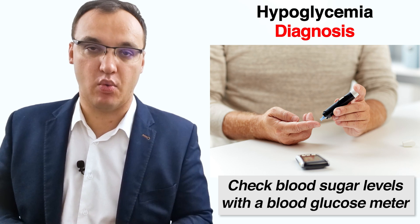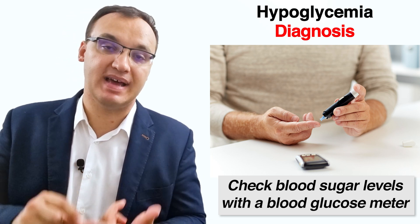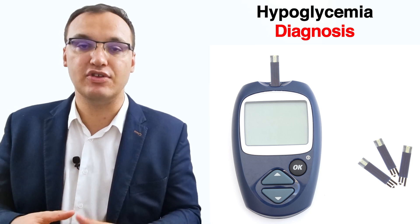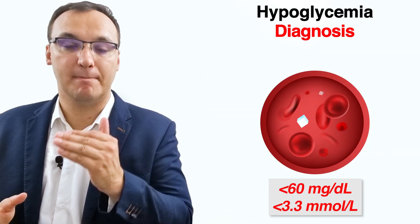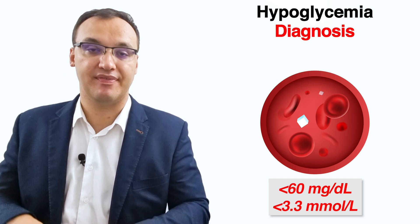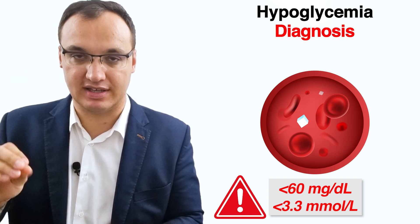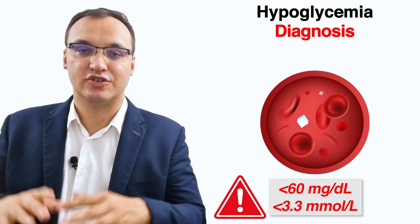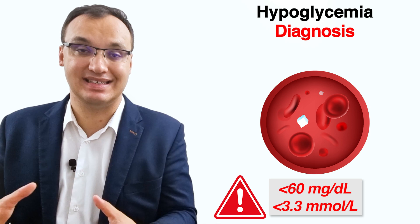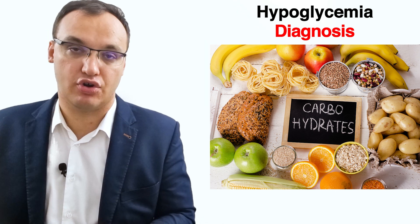How can you test for hypoglycemia? If you have signs or symptoms of low blood sugar, check your blood sugar levels with a blood glucose meter — a small device that measures and displays your blood sugar level. You have hypoglycemia when your blood glucose levels drop below 60 mg per deciliter or below 3.3 mmol per liter. This alert value is essential because it signals that the patient can develop clinically significant hypoglycemia and that prompt appropriate actions such as eating carbohydrates are needed.